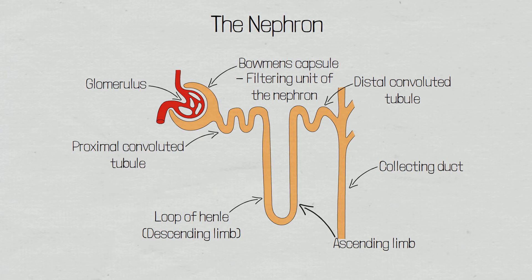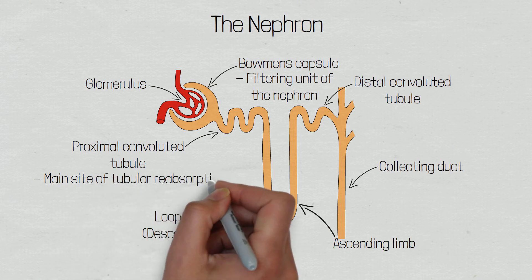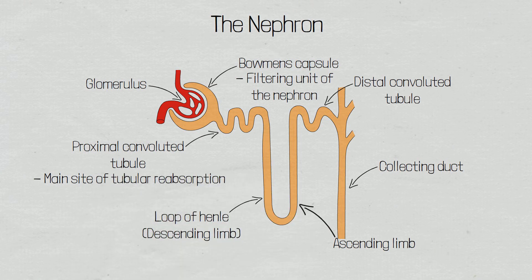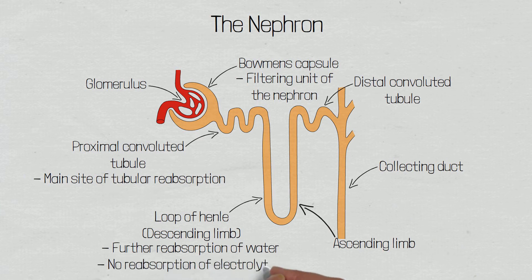Filtrate then enters the proximal convoluted tubule, which is the main site for tubular reabsorption of electrolytes and water, and where 100% of amino acids and glucose are reabsorbed in normal health. The descending limb of the loop of Henle is responsible for further reabsorption of water, but does not allow for the movement of electrolytes. So water will exit the tubule and into the interstitial space of the renal medulla, but electrolytes will not.